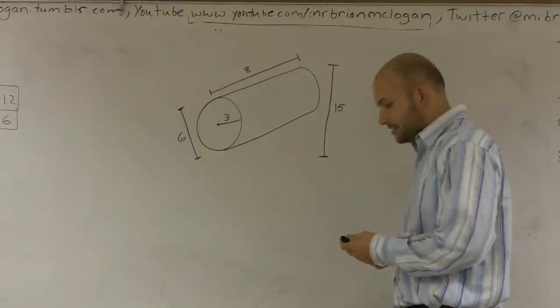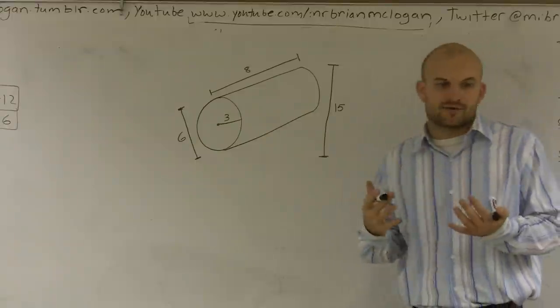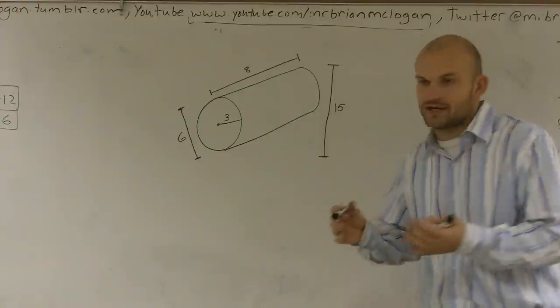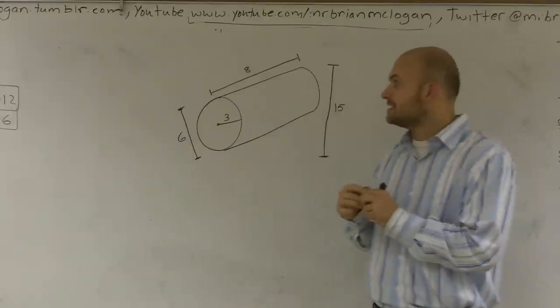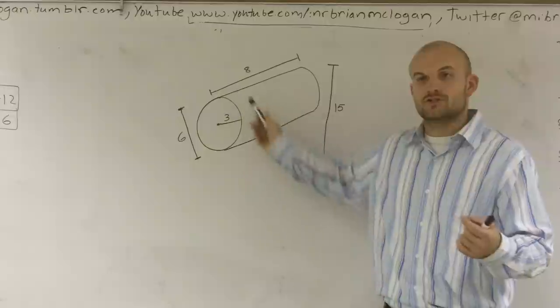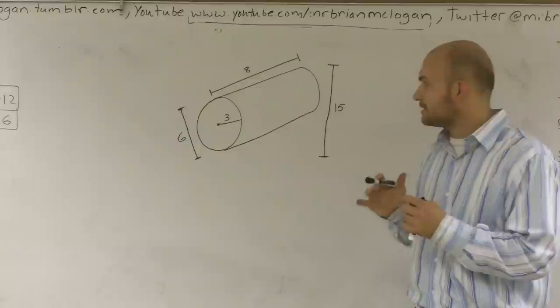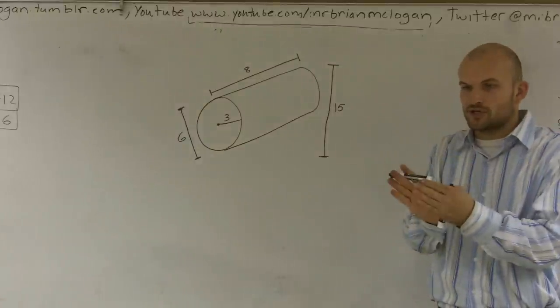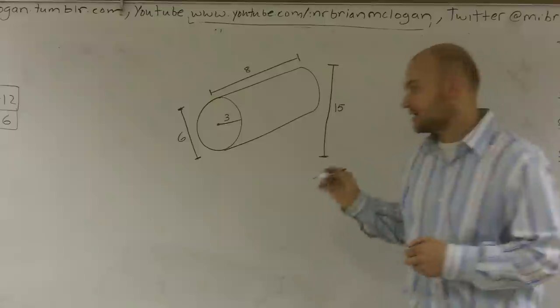So to find the volume, one thing we need to do is we need to find at least the area. Because remember, area is very similar. Area is a two-dimensional figure and it's all the space that a two-dimensional figure takes up. So what I need to do is I need to find the area of something. Well, we have a circle here. And the reason why I'm going to want to take the area of the circle is what we're going to do is we're going to try to take the area of the circle, and we're just going to keep on multiplying it. So let's find the area first of the circle.